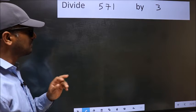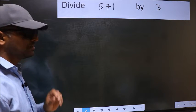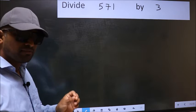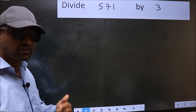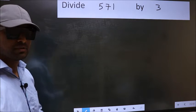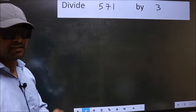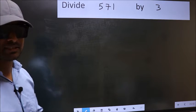Divide 571 by 3. While doing this division, many do this mistake. What is the mistake that they do? I will let you know. But before that, we should frame it in this way.